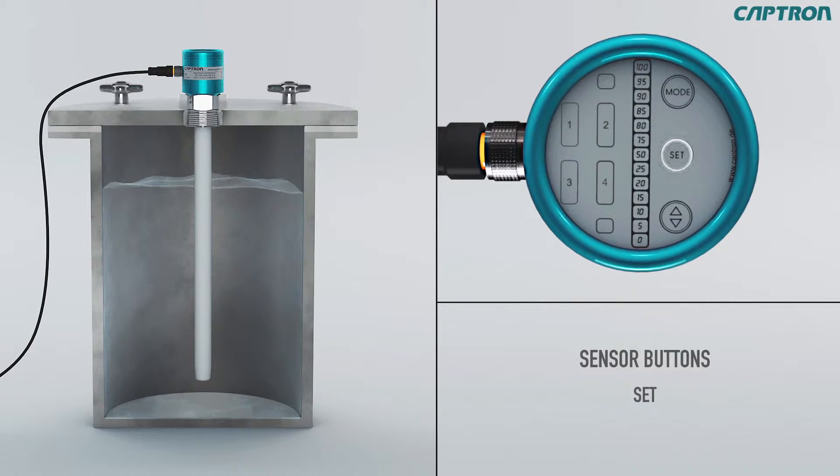The set button allows you to reach the next set point and save the current settings, and the up-down button lets you set values and functions.